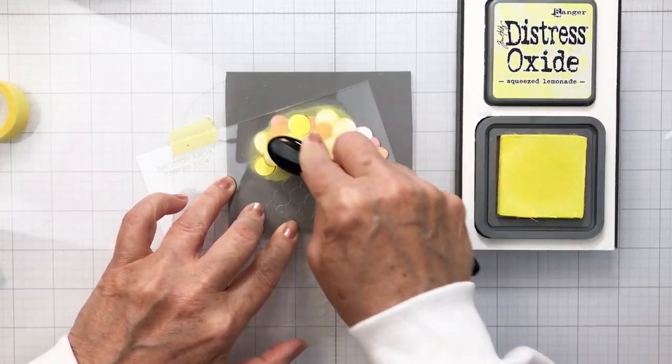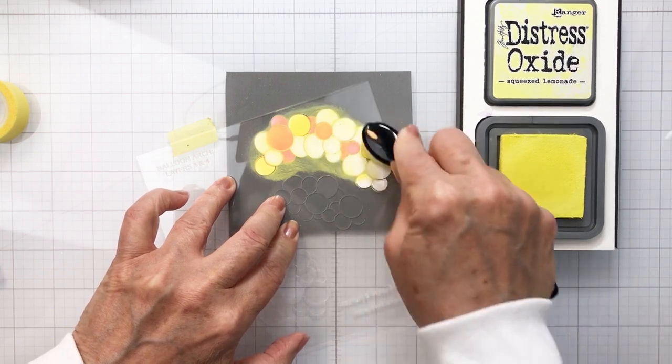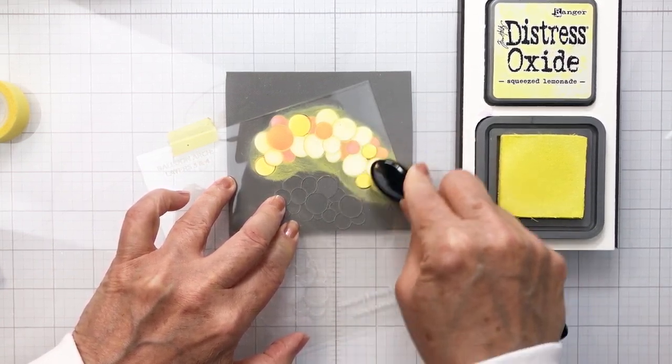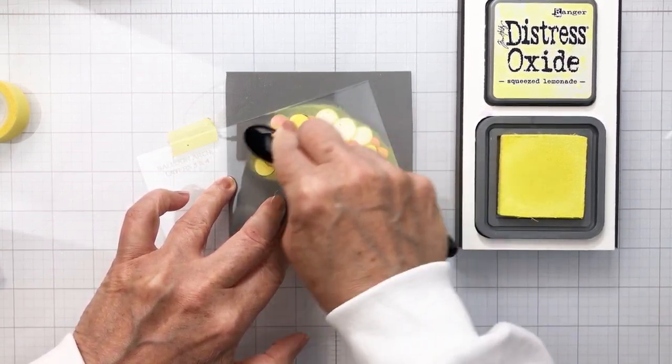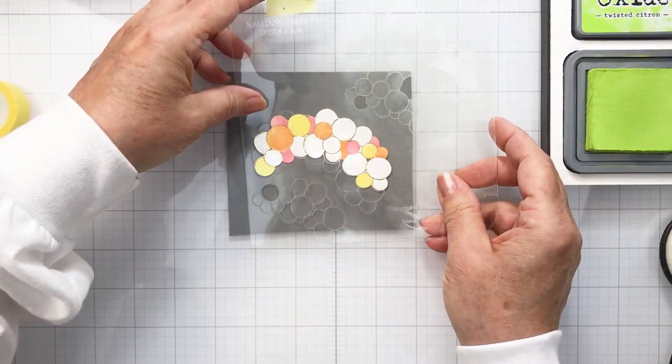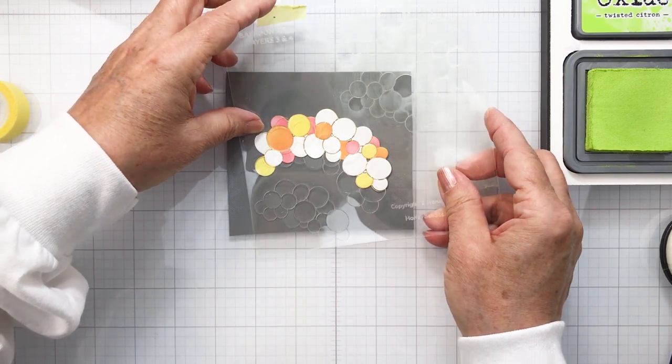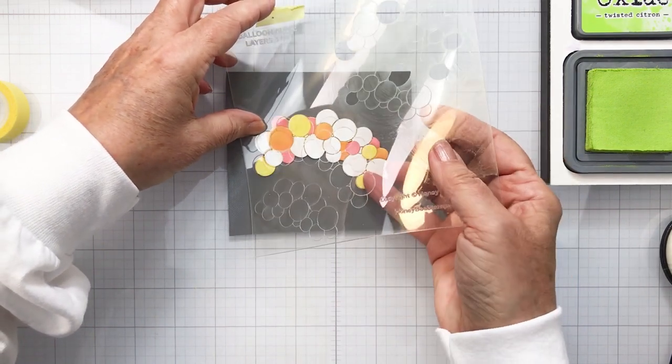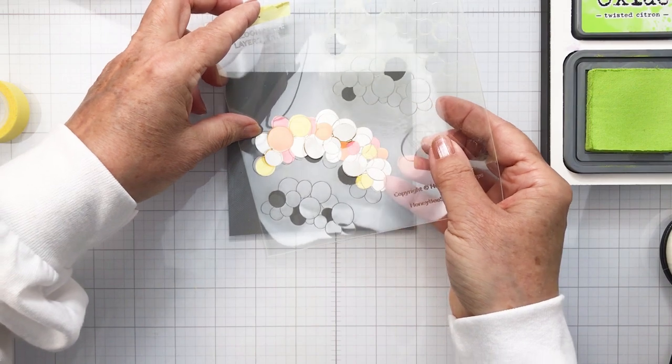Now this is the second layering stencil in that set of three stencils and I'm using the top section of that stencil to color in or ink blend in the open areas on that one. Now I'm just shifting down to the bottom area of the stencil which is the next largest.